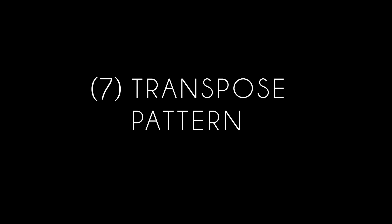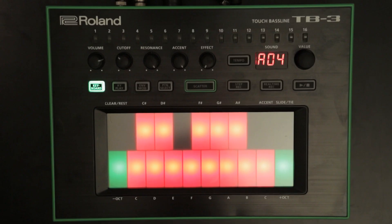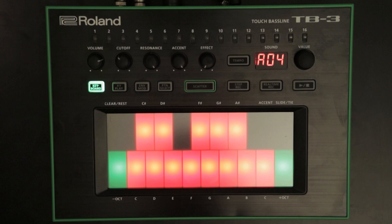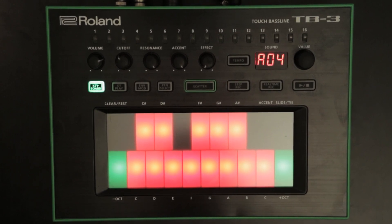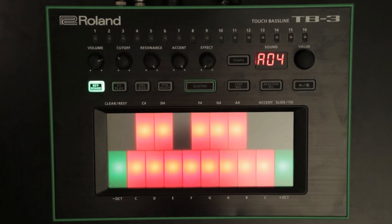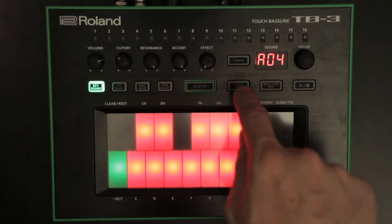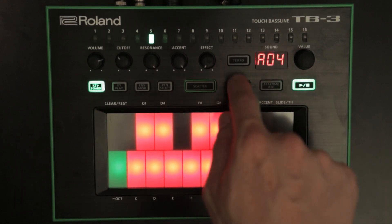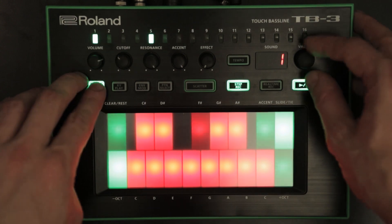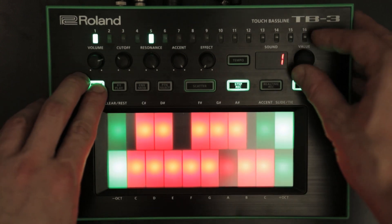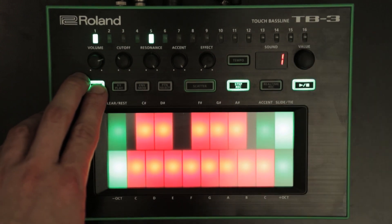Function 7: Transpose Pattern. You can now transpose a pattern. Any note that gets transposed above or below the allowed note range will end up as the lowest or highest C. Select the pattern you want to transpose, press the step record or real time record button, then hold the keyboard button and turn the value dial.